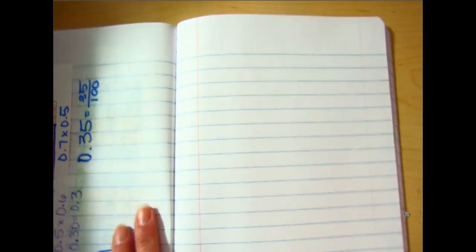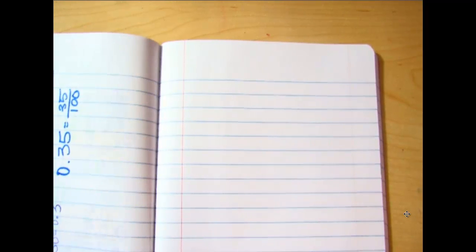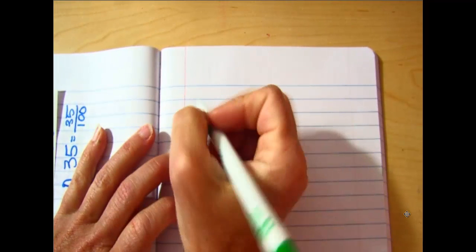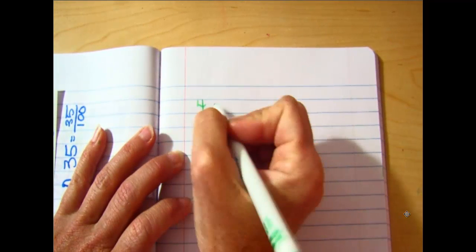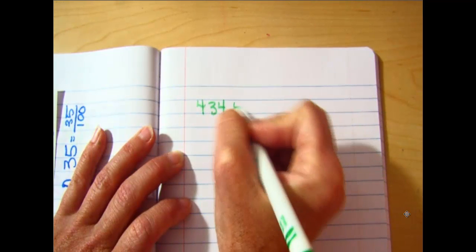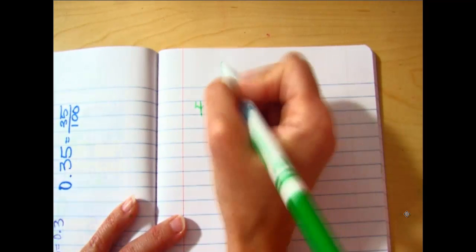When we look at division patterns with decimals, it's going to look a lot like what we did with the multiplication patterns. You're going to have situations where you have, let's say, 434.5 if I want to divide this by 10.